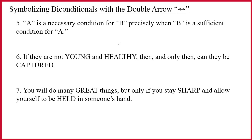The next three sentences focus on synonyms for the double arrow. If you know the synonyms for 'if and only if,' symbolizing with double arrows is really pretty easy. Sentence five: 'A is a necessary condition for B precisely when B is a sufficient condition for A.' It turns out 'precisely when,' 'precisely if,' 'exactly when,' and 'exactly if' are all synonyms for 'if and only if.' So if you know that, this is an easy sentence to symbolize.